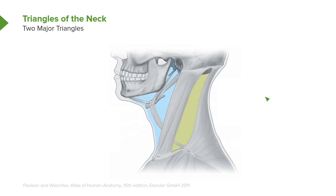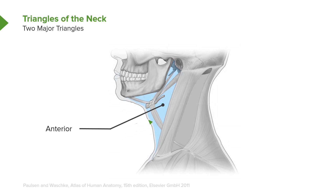We have two colored areas here. The area in blue is one of the major triangles of the neck, and the one located posteriorly is the second triangle. Because of their anatomic relationships, the one in blue is referred to as the anterior cervical triangle. The muscle seen here as a major boundary is the sternocleidomastoid, and it will separate this anterior triangle from the one that lies posterior.